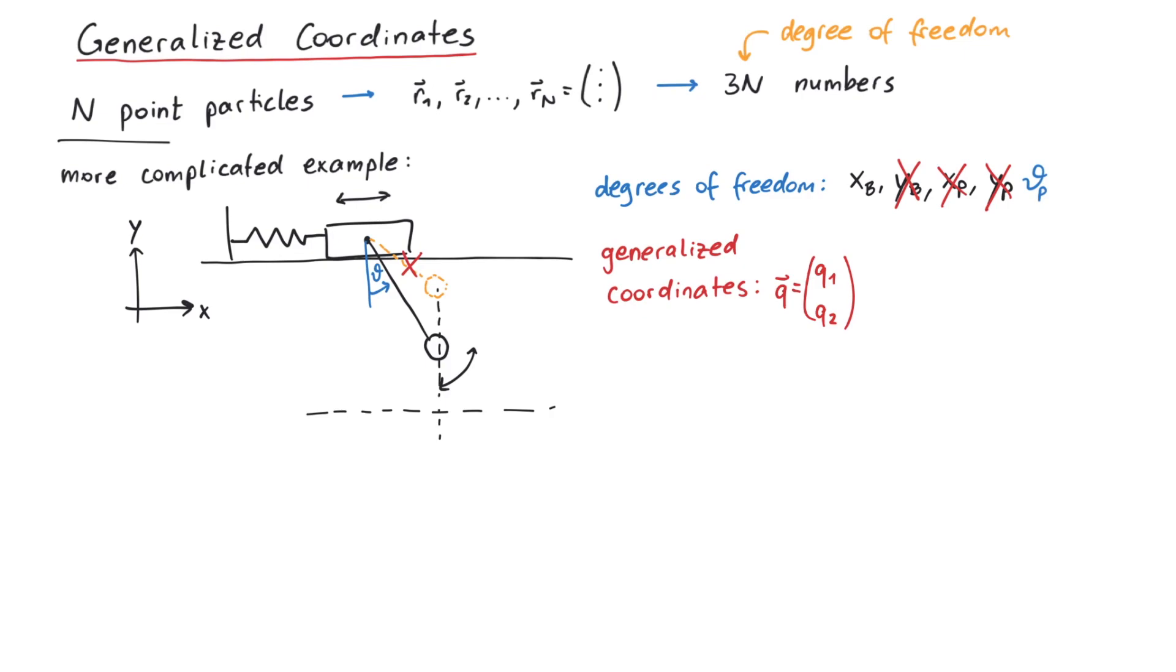They are useful to talk about general systems of objects, but once we have a concrete example, we can map each generalized coordinate to a specific choice.